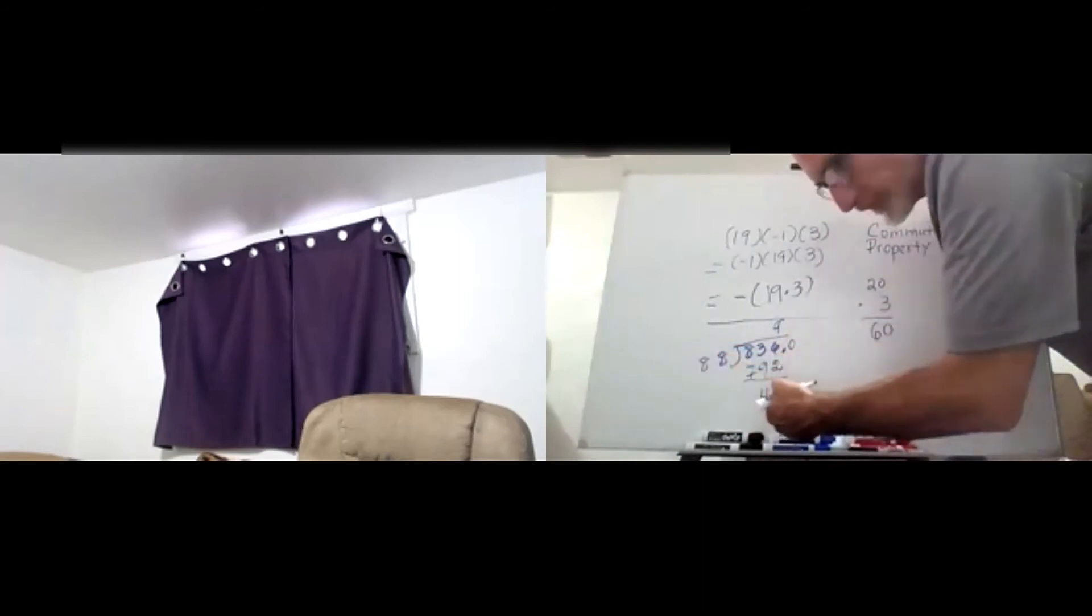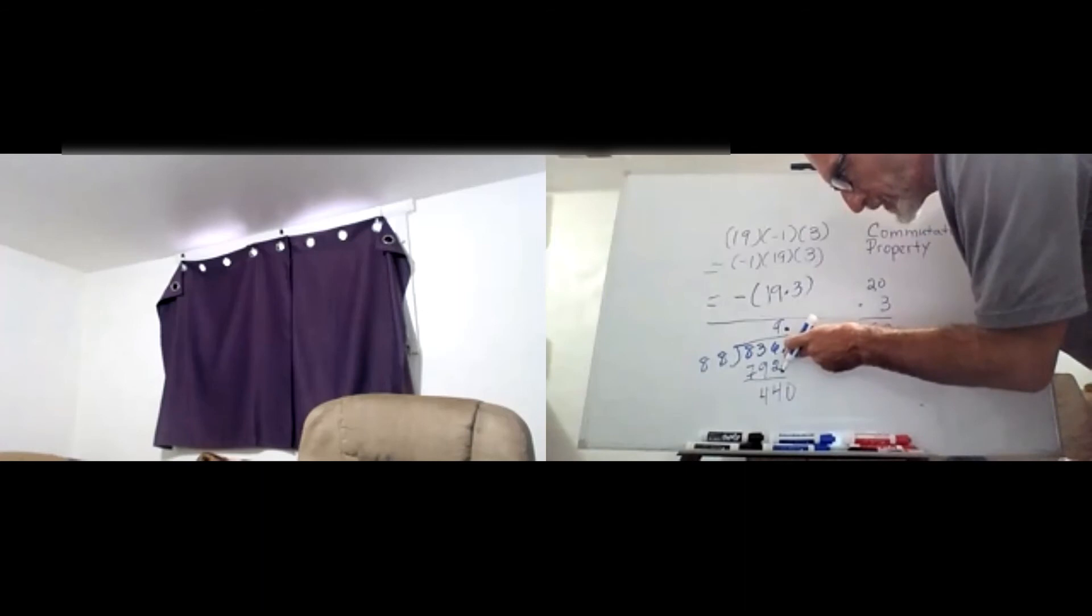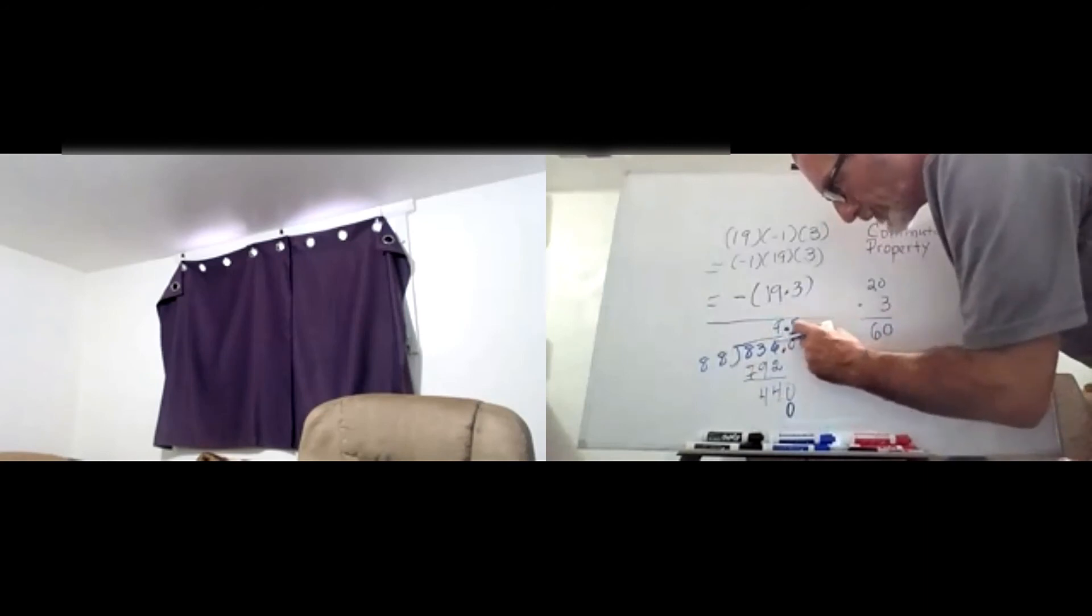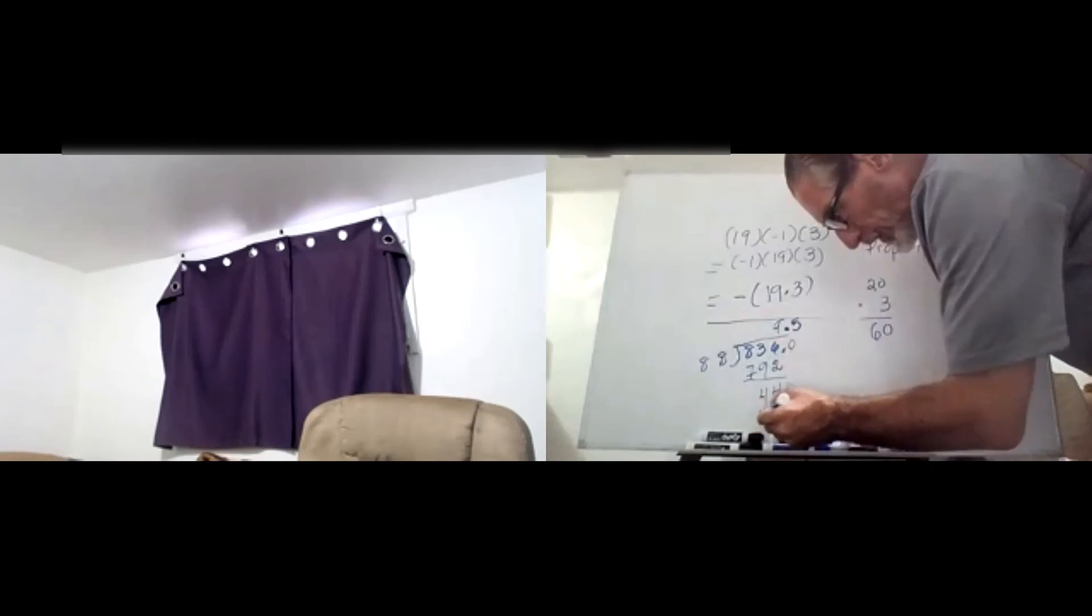Now by the way, where I put the decimal there, got to put it directly above. 8 times 5 is 40, carry a 4. 8 times 5 again, 40 plus the 4 that I'm carrying.